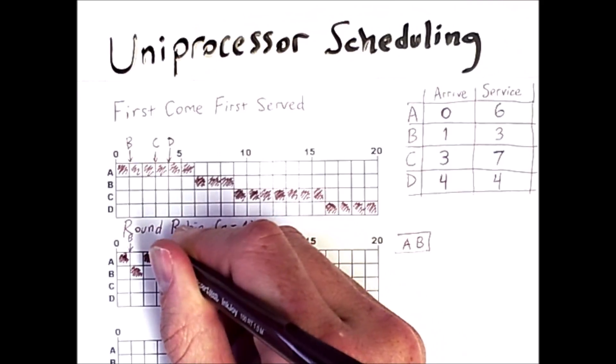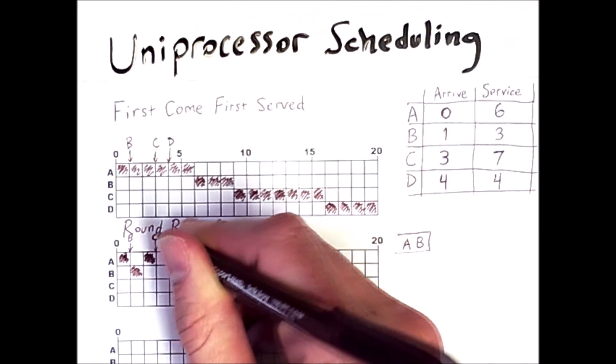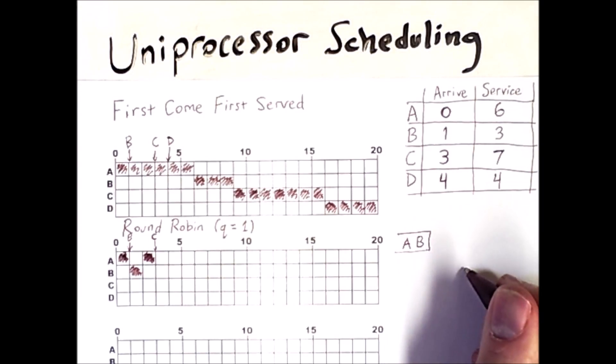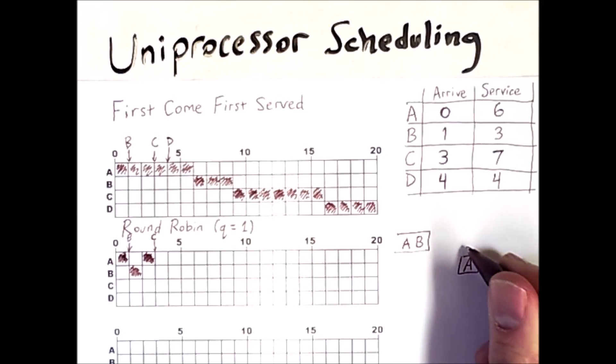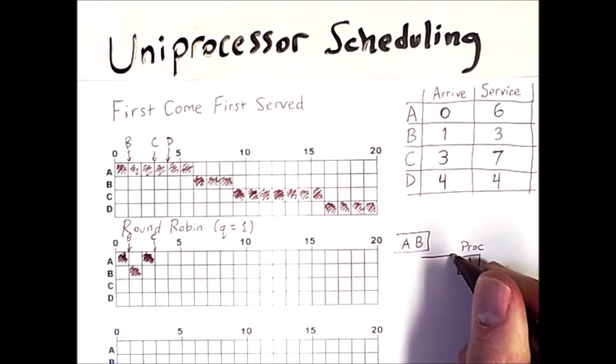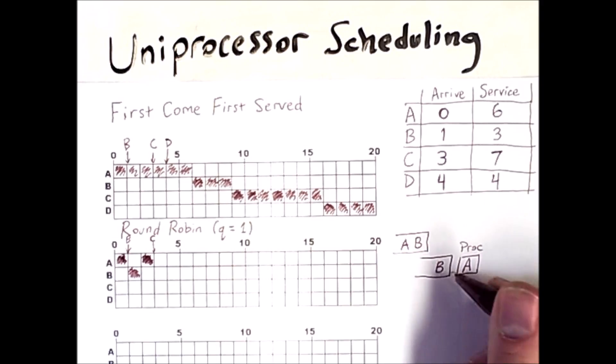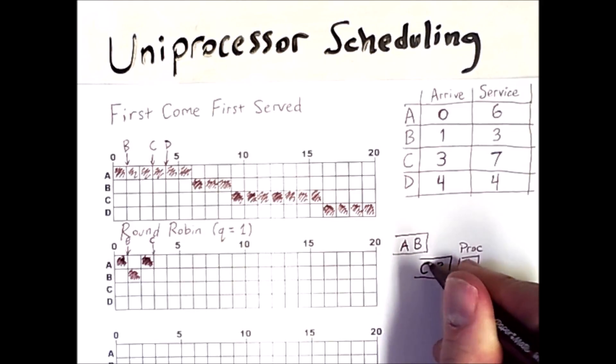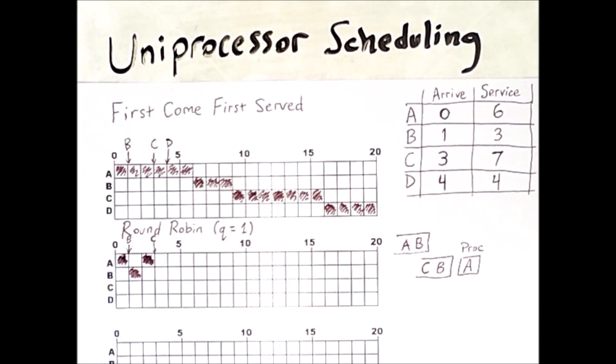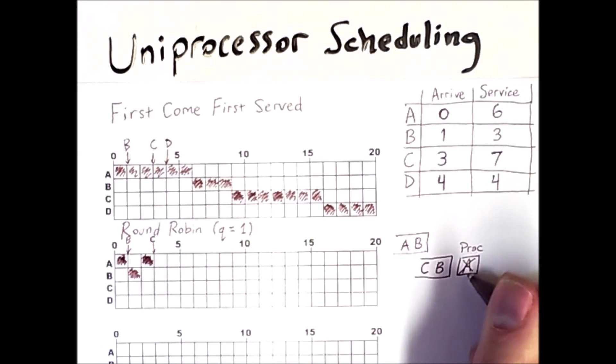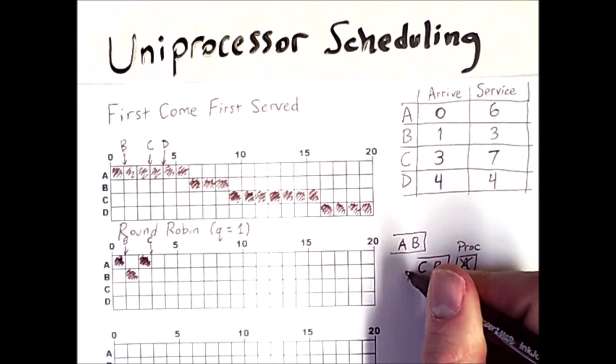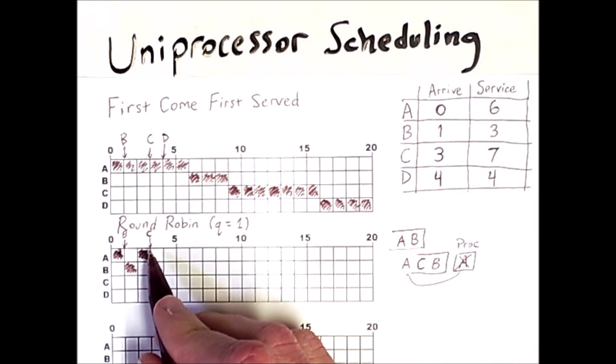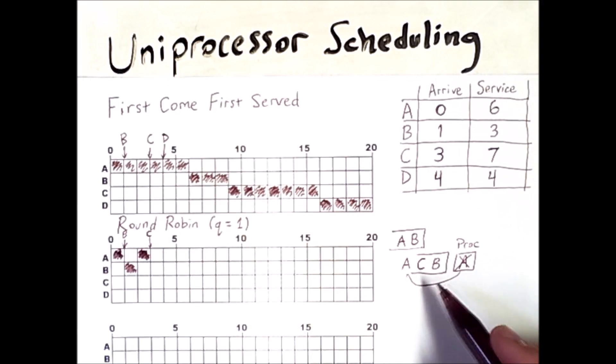And then here we have C arriving. And once again, we have to think about how our little convention works. So we had A running on the processor and B was already in line in the ready queue. Then C arrived. So C got in line behind B. Then A finished its quantum, got kicked off the processor and went back to the end of this queue. So this is what the queue looks like right before time three. So the actual next processor to run is B.